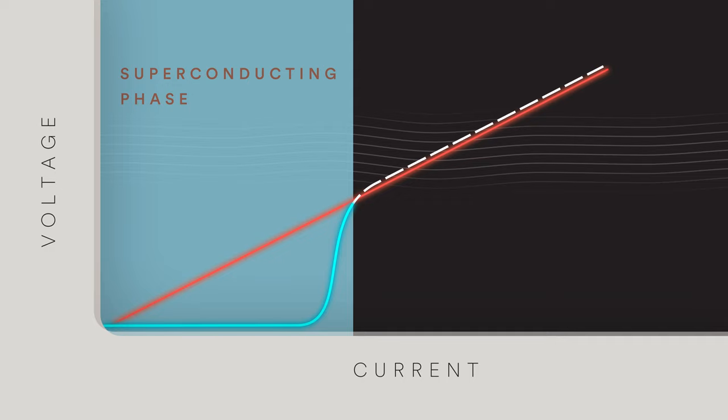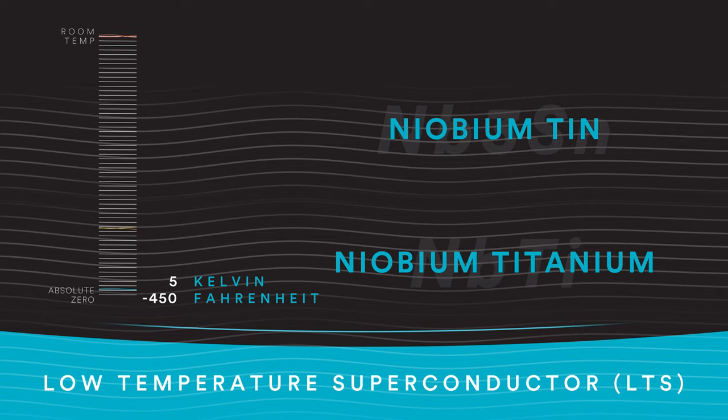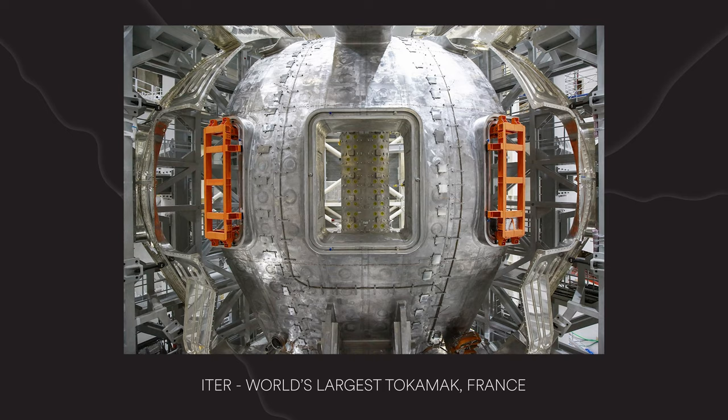Low-temperature superconductors, such as Niobium-Tin or Niobium-Titanium, need to operate at very cold temperatures, around 5 Kelvin or minus 450 degrees Fahrenheit, which requires cooling using liquid helium. Tokamak designs such as ITER were designed around these types of superconductors.